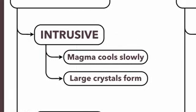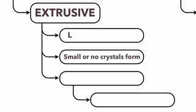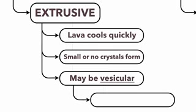What about the second type? These are called extrusive igneous rocks. Instead of forming deep underground and cooling slowly from magma, these form on the surface. And because they cool really quickly from lava, you're going to get small or no crystals at all. As a result, they may even have air bubbles trapped inside, which is something we call vesicular. So extrusive rocks form on the surface very quickly, and so you get very small or maybe even no crystals, and they may have air bubbles trapped inside.